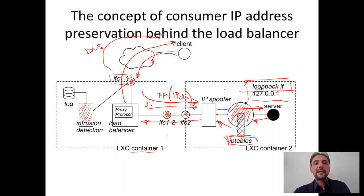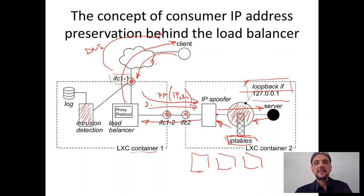This architecture is simplified and contains only two containers. The second container can be replicated, and we can have multiple containers — the same as container 2 — which then fully utilizes the load balancer.